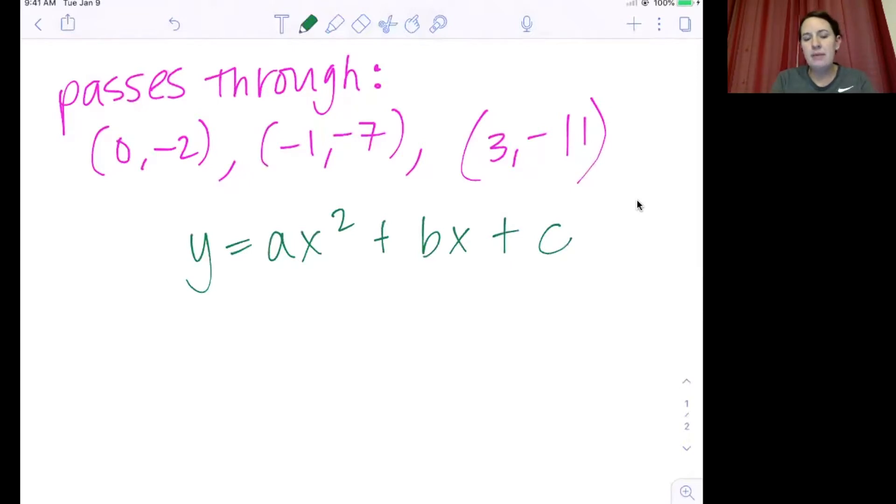We're going to, in Desmos, create a table of values with these ordered pairs. So we have our x and y: (0, -2), (-1, -7), and (3, -11). I'm going to go ahead and flip over to Desmos and type those three ordered pairs into a table.